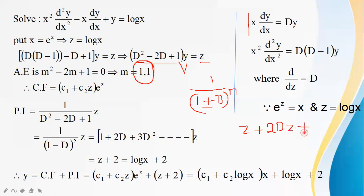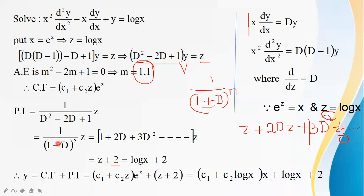Multiplying the expansion into z: z + 2D(z) + 3D²(z) + ... = z + 2(1) + 0 (since D means d/dz, and higher powers of D applied to z are zero). So PI = z + 2.